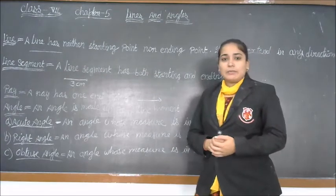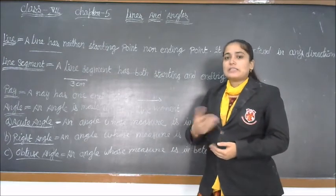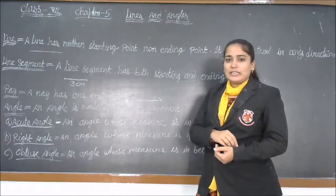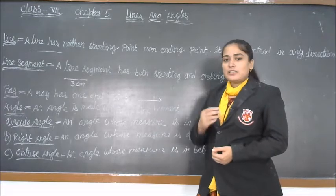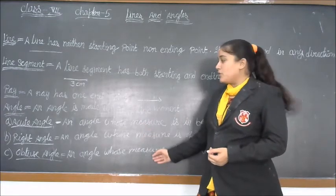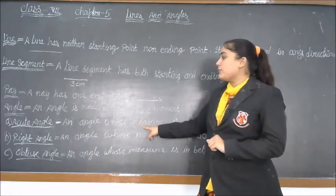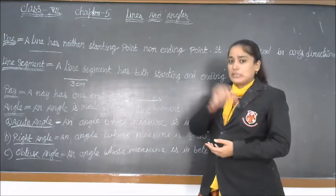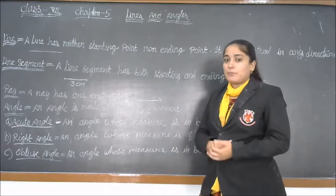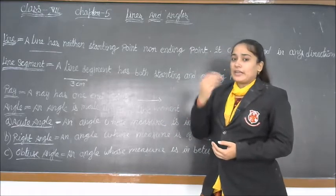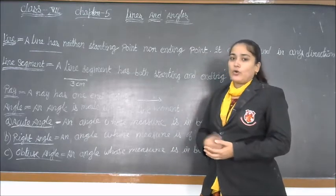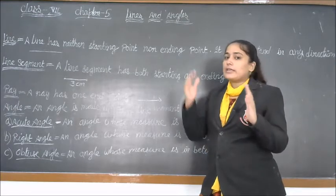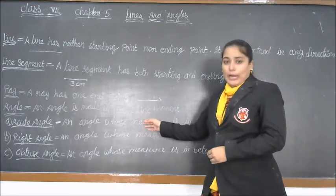You know about degree measurements like 50°, 60°, 100°, 180°, 30°. The first type is acute angle — an angle whose measure is between 0° and 90°. It cannot be greater than 90° and cannot be smaller than 0°. So, any angle between 0° and 90° is an acute angle.